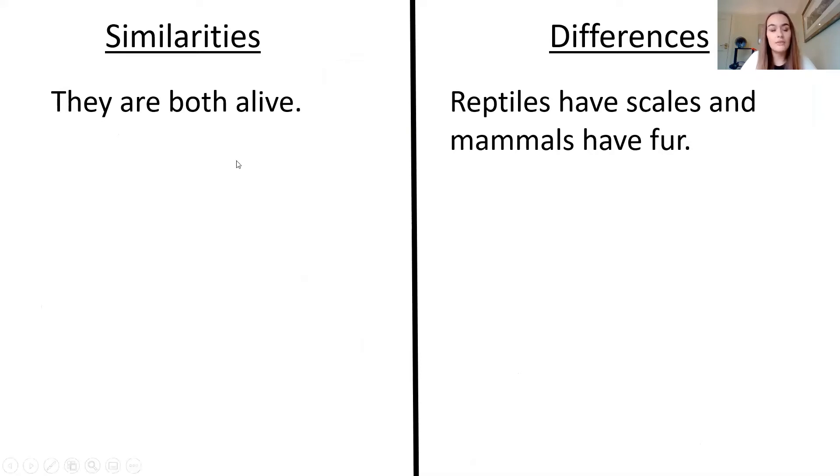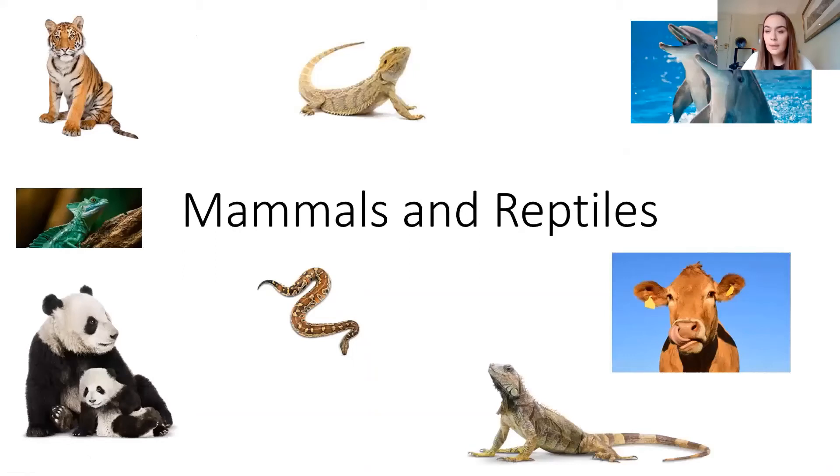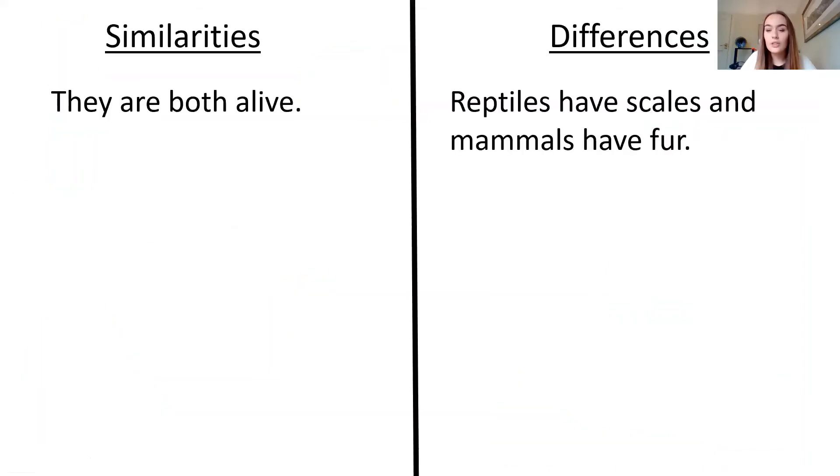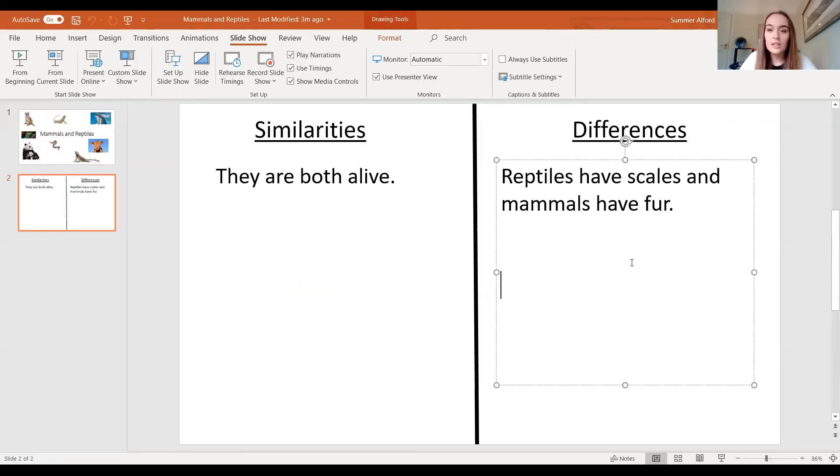So I've already done some myself. I've written some sentences and you can write some sentences too. I've said that they are both alive. And one difference is that reptiles have scales as their skin and mammals have fur on their skin. You can tell that on our last page and it's really quite an easy way to tell whether an animal is a mammal or a reptile. So let's write one sentence together. Reptiles have scales and mammals have fur.